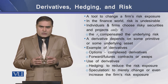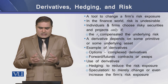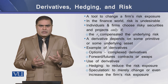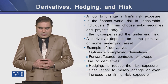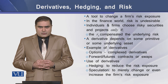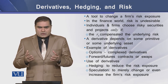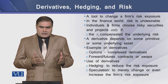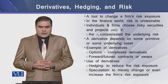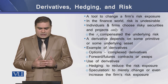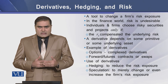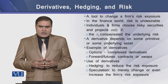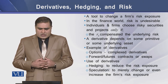In the finance world, risk is undesirable for every individual and every corporate firm in the contemporary world. Individuals and firms choose those risky projects or securities only if these projects and financial instruments offer a required rate of return that compensates the underlying risk. A derivative depends upon some primitive or underlying asset, object, or security.